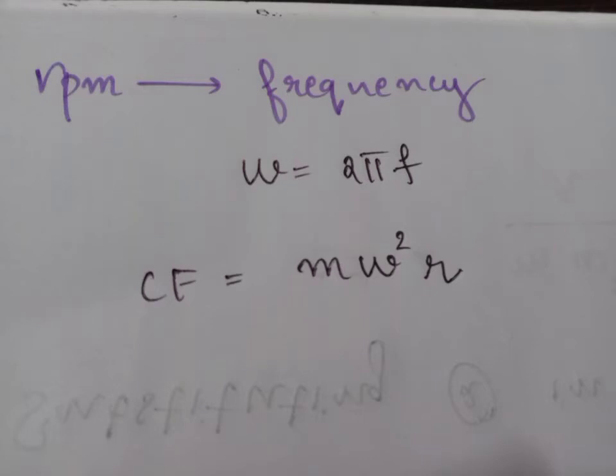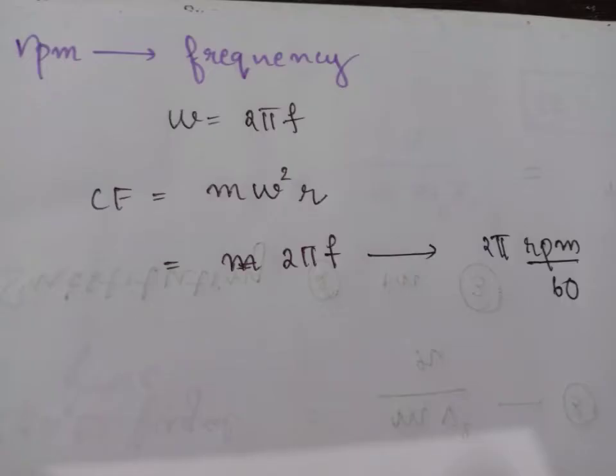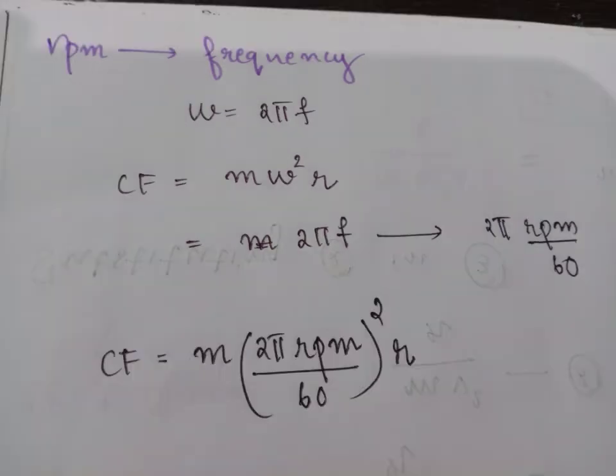Writing down the equation, omega equals 2 pi f, where f is frequency. Here we consider f as RPM, so in place of f we write RPM by 60.